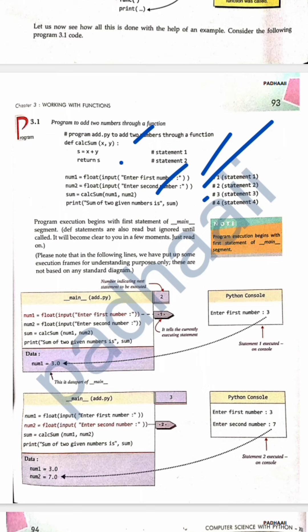Whenever it goes into the main function, that is add.py, what does it do? This is the program saved with the name add.py. Python files have the extension .py. Program execution begins with the first statement, which is the main segment.